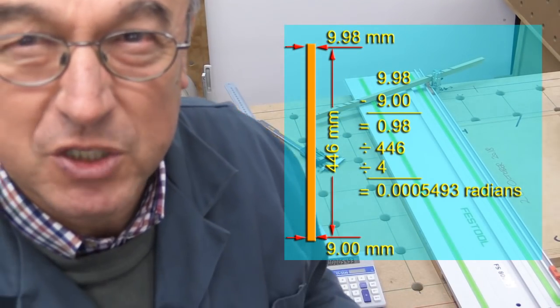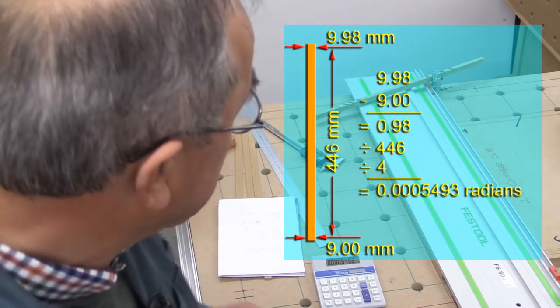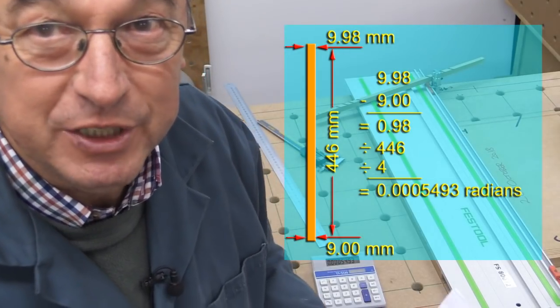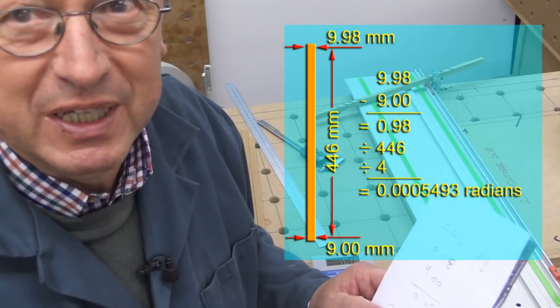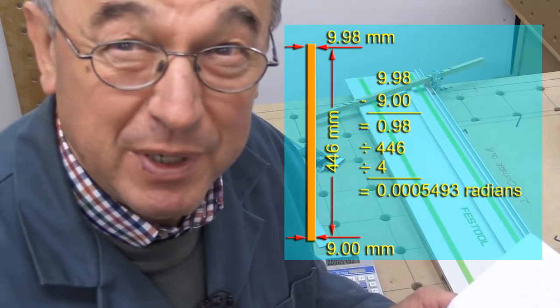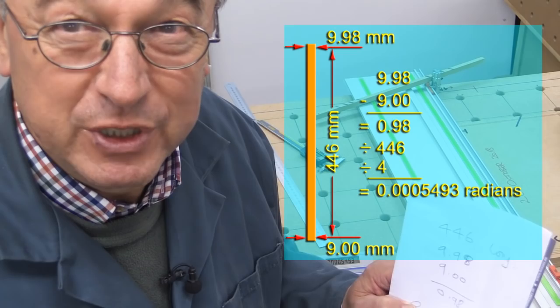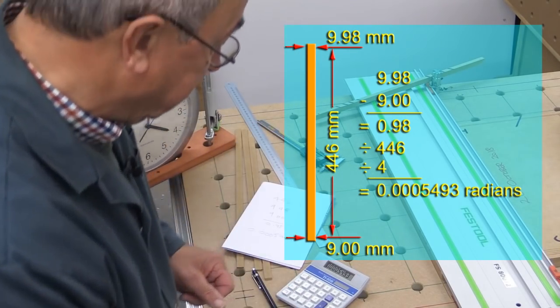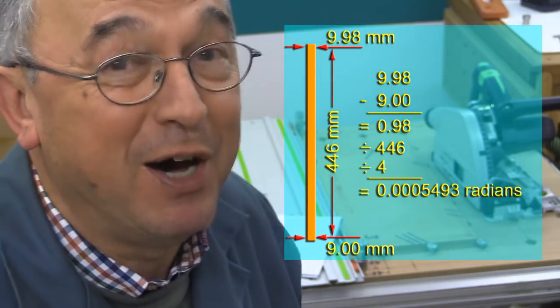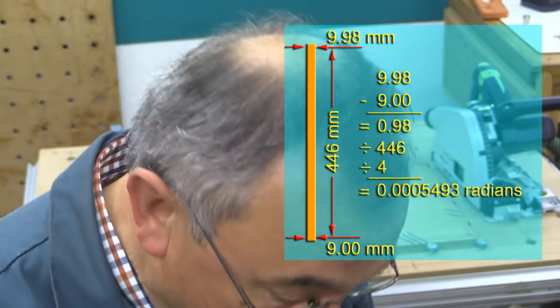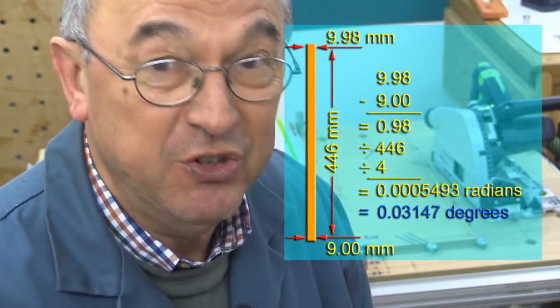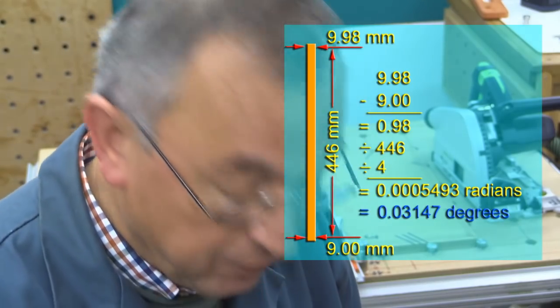Now, the clever ones amongst you will know what that means. But I believe that gives you the angular measurement in radians. And so, if you divide by 2π and multiply by 360, you get the degrees out. Let me see if I can do that. I haven't got π on there. I'm sorry, but I didn't have π on this calculator. So, I had to nip into the house. Anyway, 0.0005493 radians equals 0.03147 of a degree.